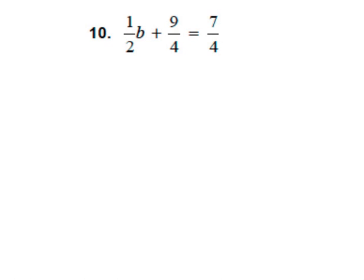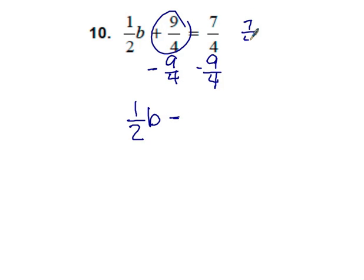In order to isolate B, we first have to get rid of this 9 fourths by subtracting from both sides. That leaves us with 1 half B equals 7 fourths minus 9 fourths, negative 2 fourths.